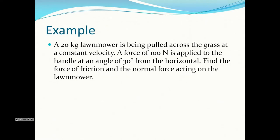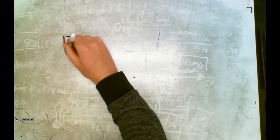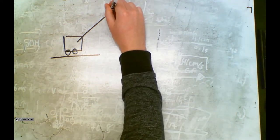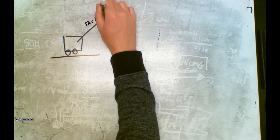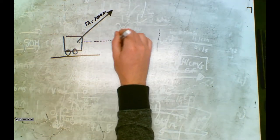Let's jump into an example. A 20-kilogram lawnmower is being pulled across the grass at a constant velocity. A force of 100 newtons is applied to the handle at an angle of 30 degrees from the horizontal. Find the force of friction and the normal force acting on the lawnmower. We need to draw a free body diagram first. The lawnmower is on the ground, being pulled with 100 newtons at 30 degrees from horizontal.